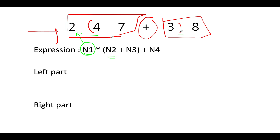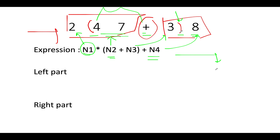The second variable is N2, starting from the insertion point of the left parenthesis up till the plus sign — here N2 is represented by 47. The third variable is N3, starting from the plus sign up till the insertion point of the right parenthesis — here N3 is 3. The last one is N4, which starts from the next pointer to the right parenthesis till the termination of the string — here it is 8. We will look for all possibilities of N1, N2, N3, and N4 to identify the one giving the smallest value.